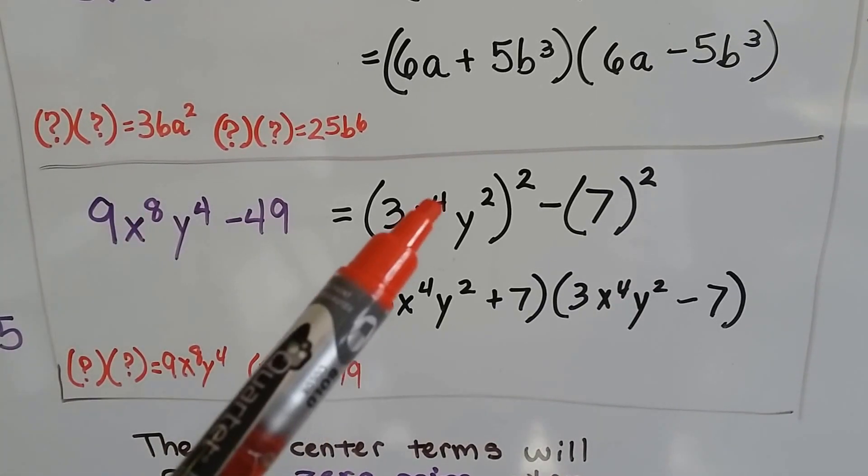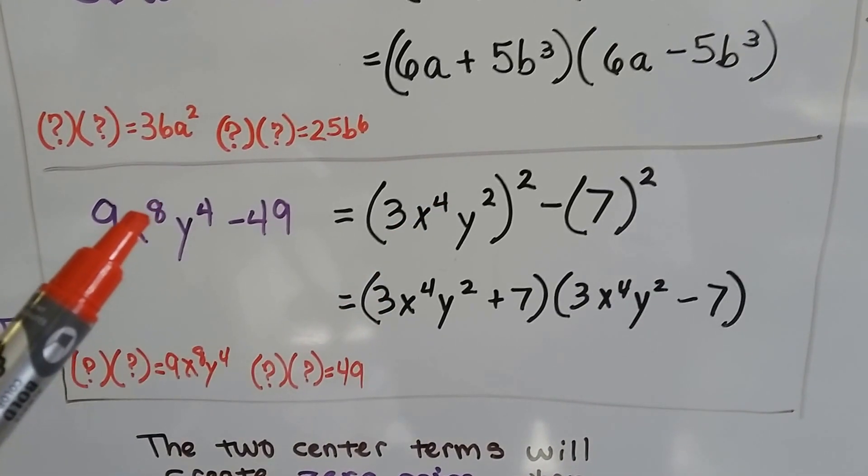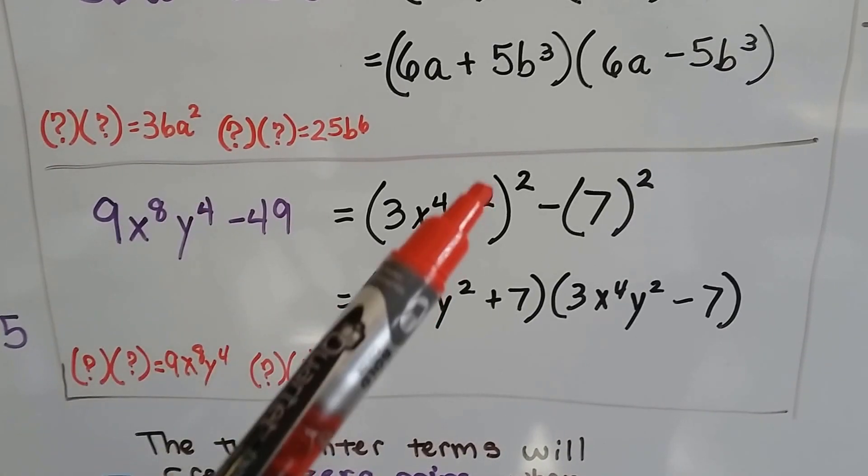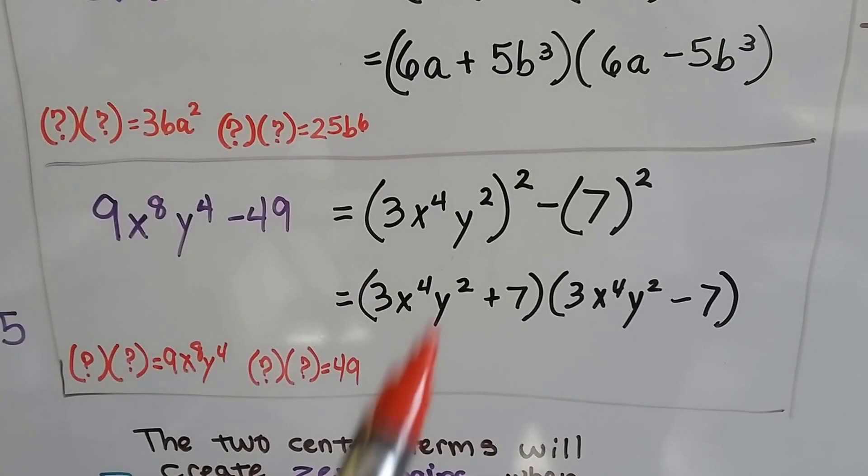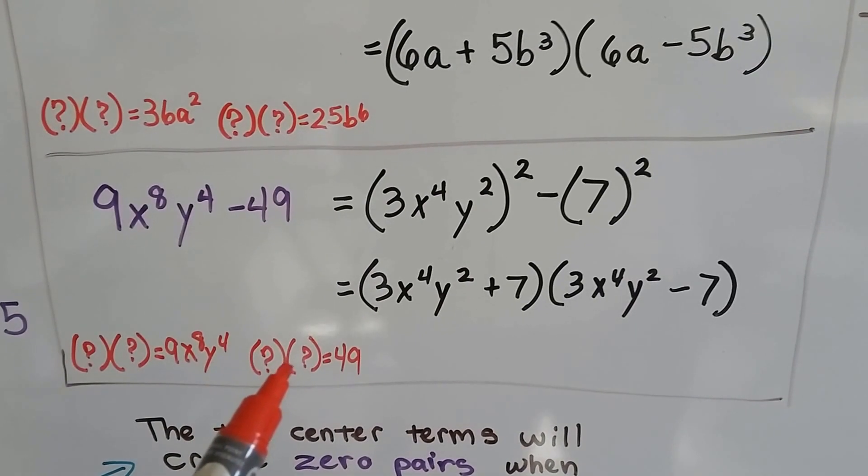And this 4 could be cut in half to a 2, because when we add them together, we'd get the 4. And what times what is 49? 7.